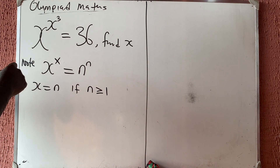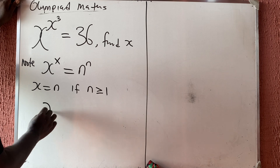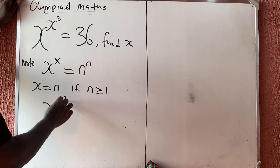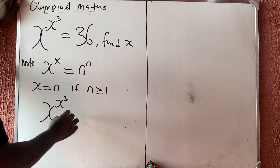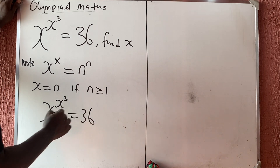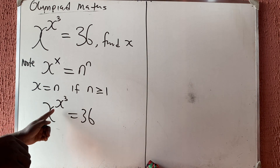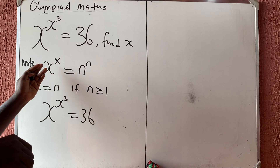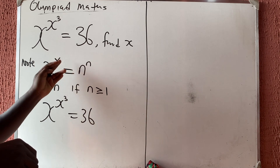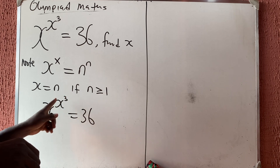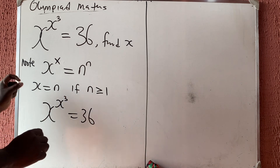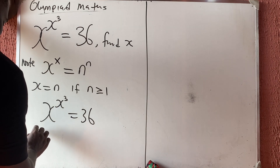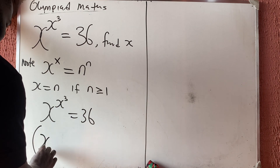We have x raised to power x raised to power x raised to power 3, equal to 36. To get x raised to power 3 on both sides, we cube both sides. So we have x raised to power x raised to power 3, all raised to power 3, equal to 36 raised to power 3.